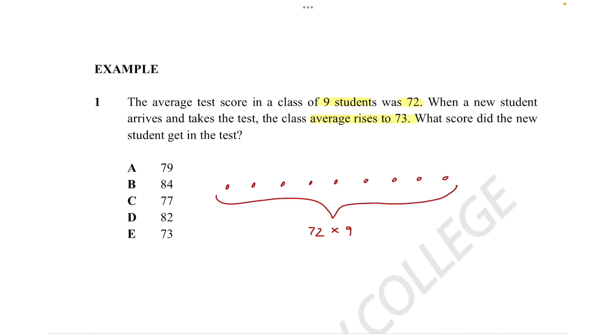Now, we know one more student joined. And there, the class average rises to 73. So now the total of these 10 students, because one more student joined, is 73 times 10. And now you can sort of see how we find the result of this one student. And in order to do that, we sort of minus this with this.